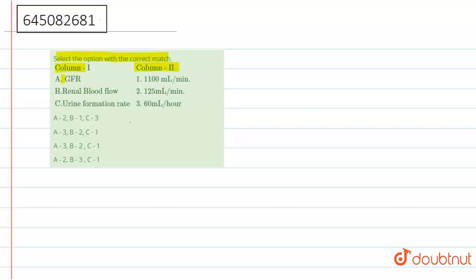So here column first option is GFR. What is GFR? We can see that here G represents glomerular, F represents filtration, and R represents rate. So it's glomerular filtration rate, and the amount of glomerular filtration rate is 125 ml per minute.